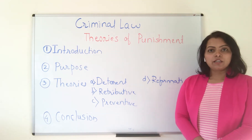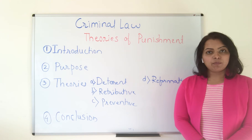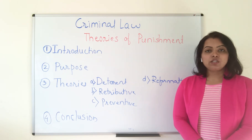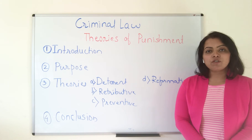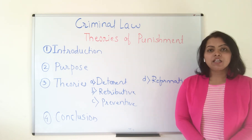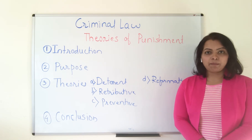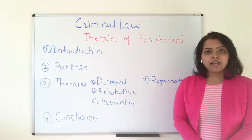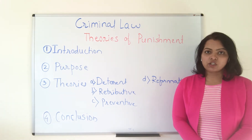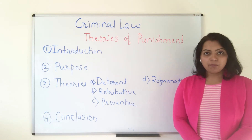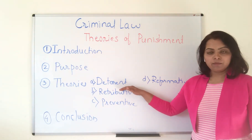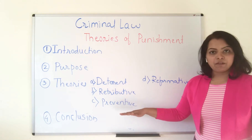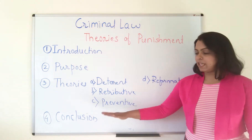The purpose of theories of punishment is to take care of the wrong which has happened in society. The purpose is to punish the wrongdoer, to give some penalty or punishment so that the person is deterred from committing the crime again. The four major theories of punishment are: deterrent theory, retributive theory, preventive theory, and reformative theory.